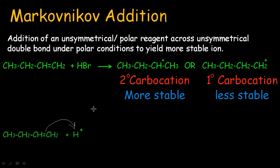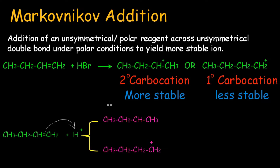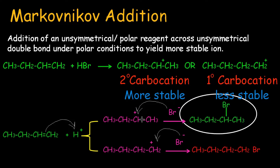Let's discuss the mechanism of the reaction. The polar conditions ionize HBr, yielding H⁺ and Br⁻ ions. The double bond, which is electron-enriched, attacks the proton, yielding either a primary or secondary carbocation. This carbocation is then attacked by the negatively charged Br⁻. As the secondary carbocation is more stable, the product formed via the secondary carbocation is the Markovnikov product, while no product forms via the primary carbocation.